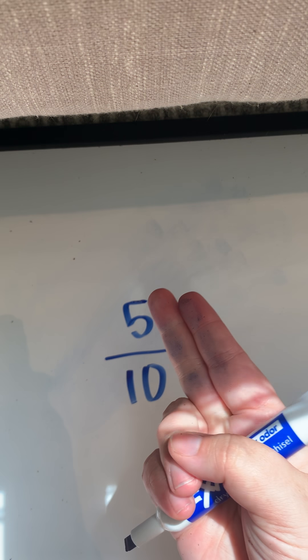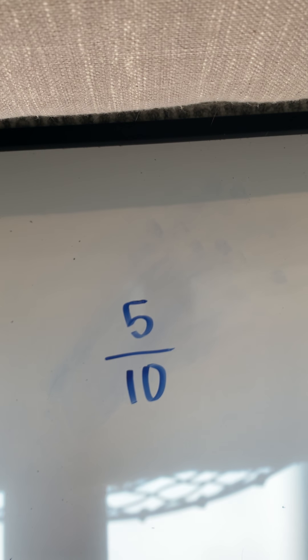Let's take a look at number four together. What fraction of the flowers are — oh, they're tricking us — what fraction of the flowers are not red? So am I going to count the red ones? No, I'm going to count all of the other colors. Let's count those together: one, two, three, four, five. I have 10 flowers in all and five flowers that are yellow and purple — so five flowers that are not red. Five-tenths would be our answer for number four.